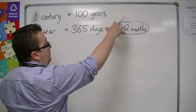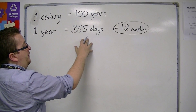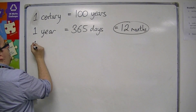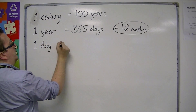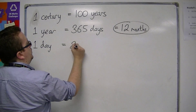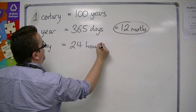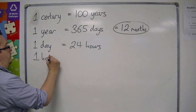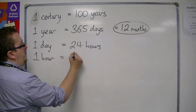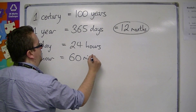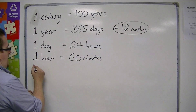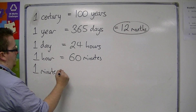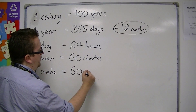From months into days — we have one day, which is 24 hours. And then an hour is split up into 60 minutes. And then one minute is split up into 60 seconds.